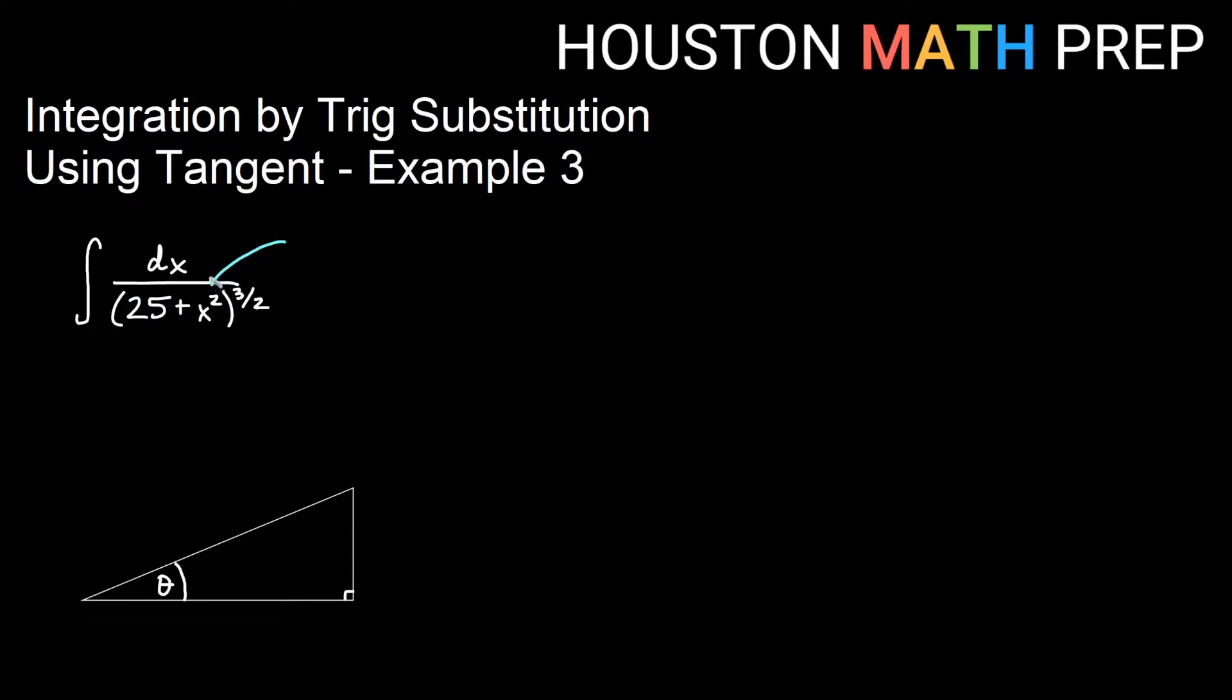We want to see this. Without the 3 halves, we'd have a nice little tangent definition, inverse tangent, but here we'll have to see this as an a squared plus u squared. Do a substitution here.